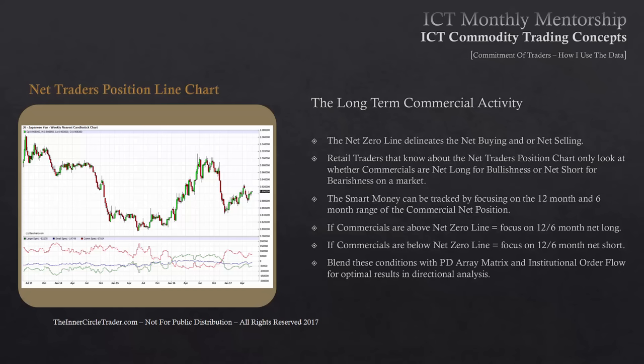Looking at the 1.00 level, we can see how price went back to the January and July 2014 highs, cleared out those equal highs, and fell from that position all the way down to a discount array level seen in January 2016. This is a weekly chart, so everything we teach in terms of PD arrays and institutional order flow gets blended together for optimal results. Now you've entered the inner circle as it relates to commercial hedging activity and COT. Until next time, good luck and good trading.